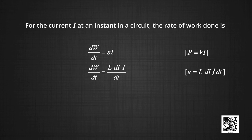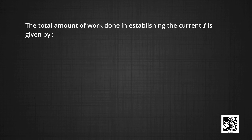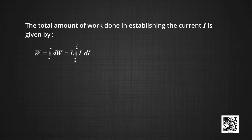Power is equal to dW by dt, which is equal to L di by dt into I. Cancelling dt on both sides, we have dW is equal to L i di. The total amount of work done in establishing the current I is given by W equal to integral of dW, which will be equal to L integral going from 0 to I of i di. So the total work done in building up the current by the solenoid is W equals half L I squared. This expression reminds us of half mv squared for the mechanical kinetic energy of a particle of mass m and shows that L is analogous to m. That is, L is electrical inertia and opposes growth and decay of current in the circuit.